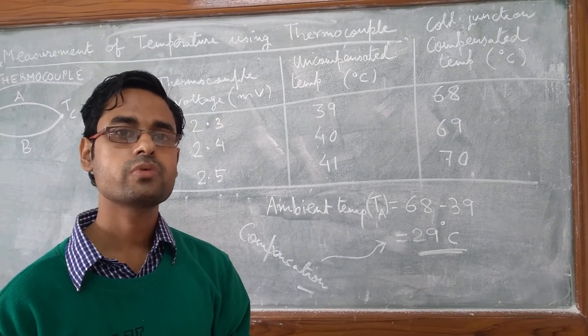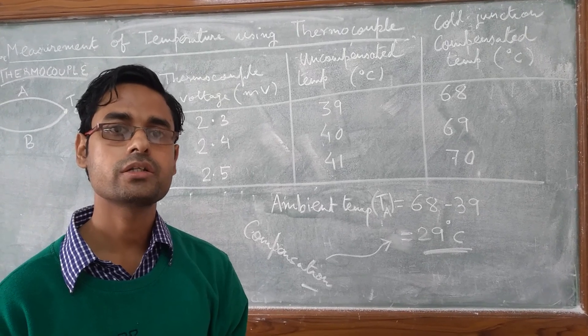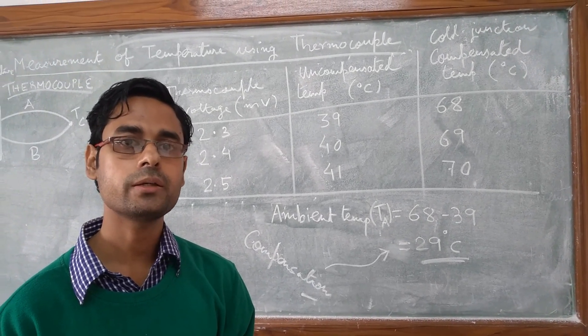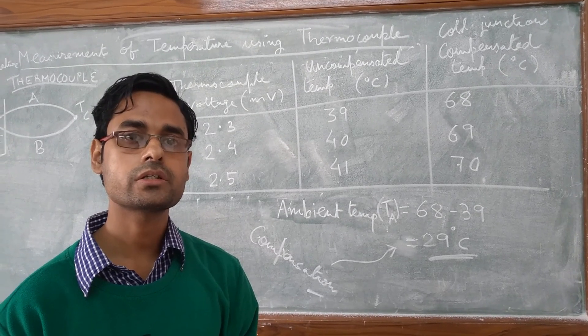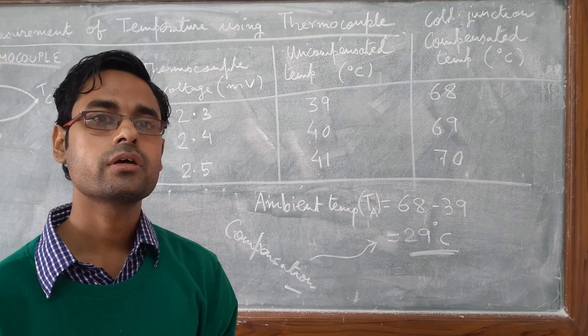And as we proceed forward you will find that an additional temperature sensor which was used in this trainer kit is the AD590. It is an IC temperature sensor which is used for this cold junction compensation circuit.